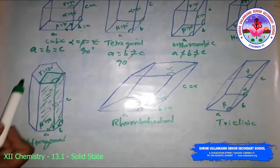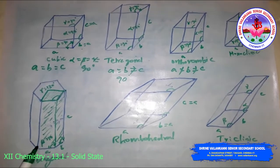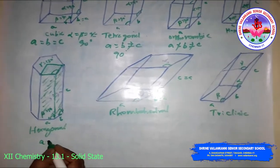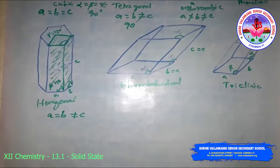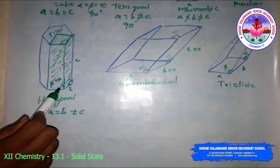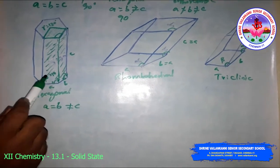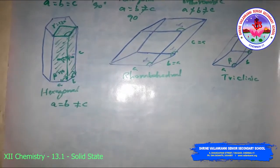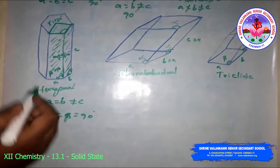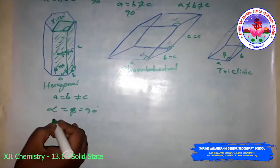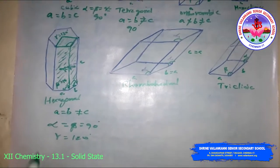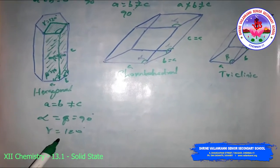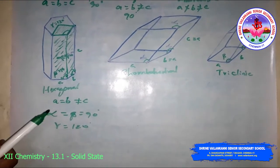The hexagonal crystal system has only one possible variation: primitive. Edge lengths: A = B ≠ C. For angles, alpha = beta = 90° but gamma = 120°, so alpha = beta ≠ gamma. Examples include graphite, zinc oxide, and cadmium sulfide.